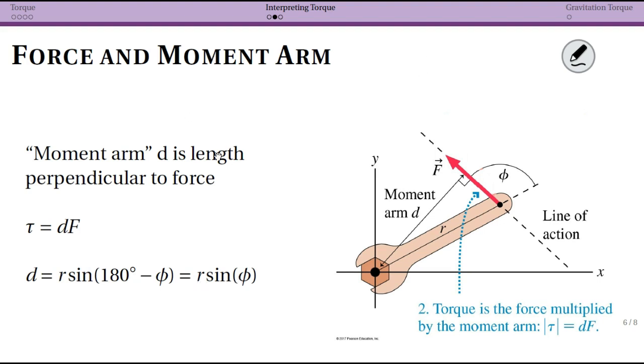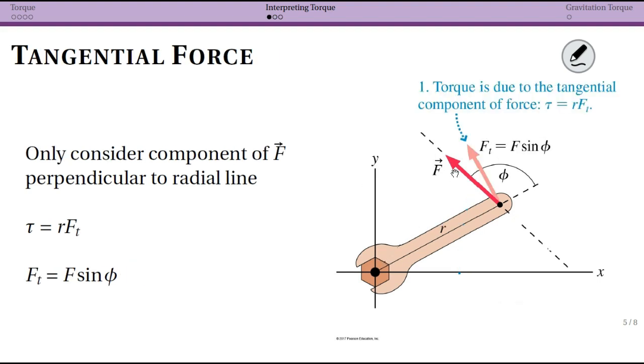So both of these is leading you to an equation that says R times F times sine phi, but there's two different interpretations where we're forcing either the distance to be perpendicular to the force or the force to be perpendicular to the radial arm.